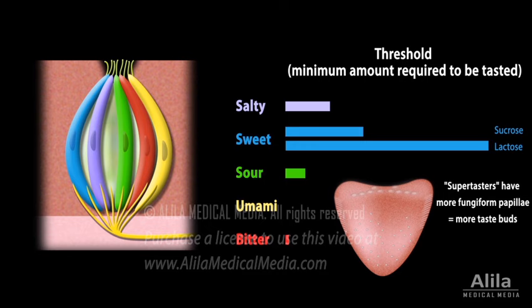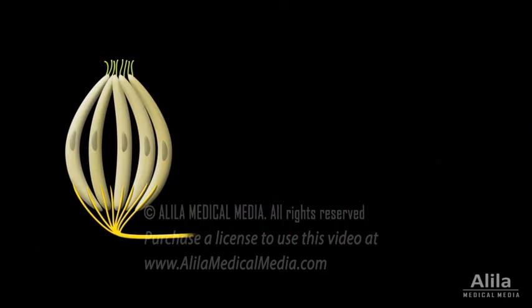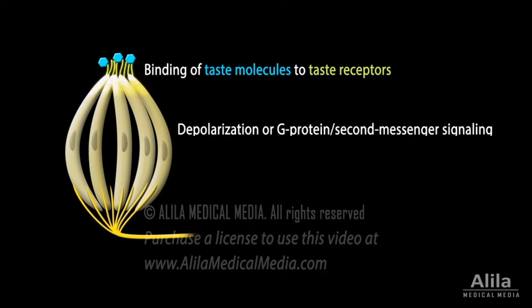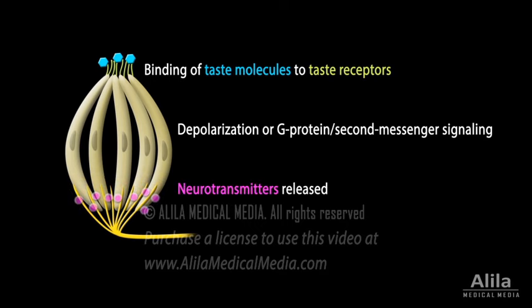Some people are supertasters. They have more taste buds on their tongue and are therefore able to detect certain subtle tastes at very low concentrations. Depending on the type of taste sensation, binding of taste molecules to their specific receptors results in depolarization, or activation of G-protein and second-messenger signaling in taste cells. In either case, the activated taste cells release neurotransmitters, which generate action potentials in sensory nerve fibers.